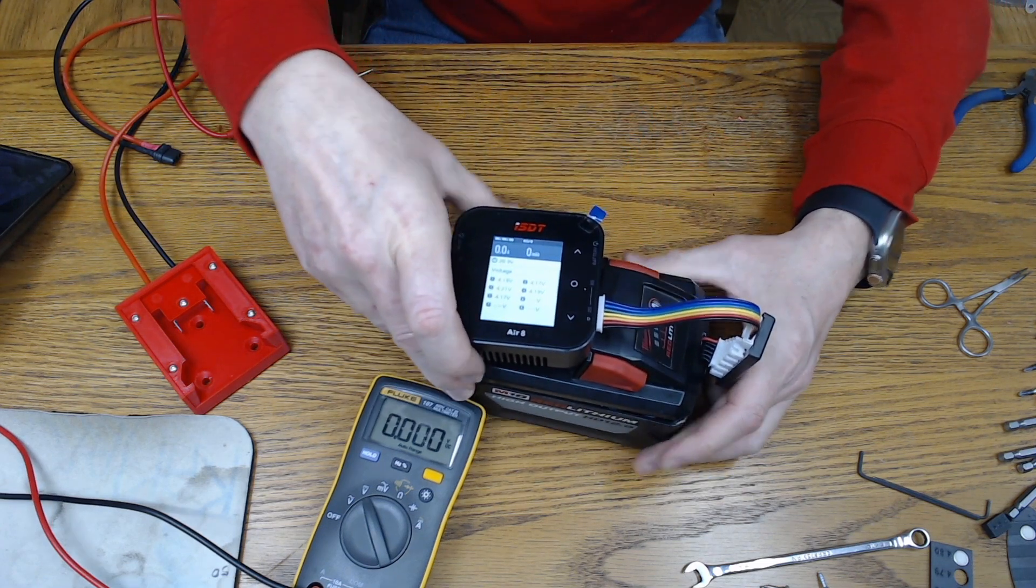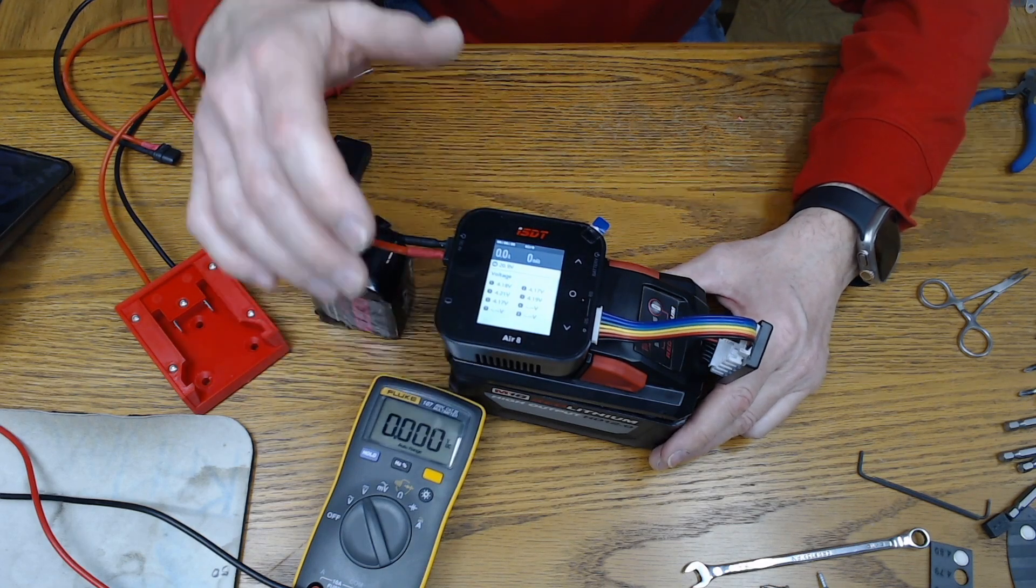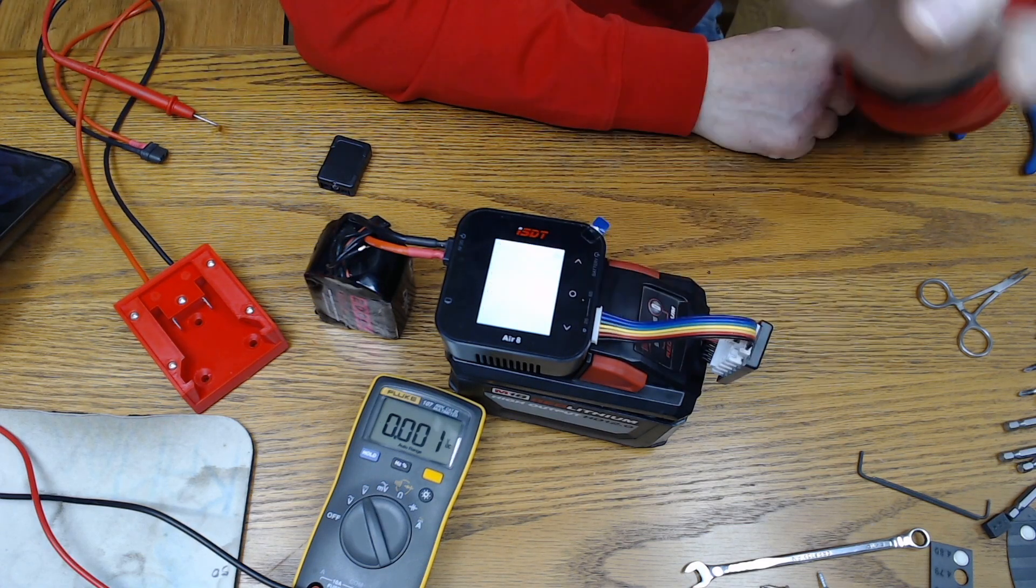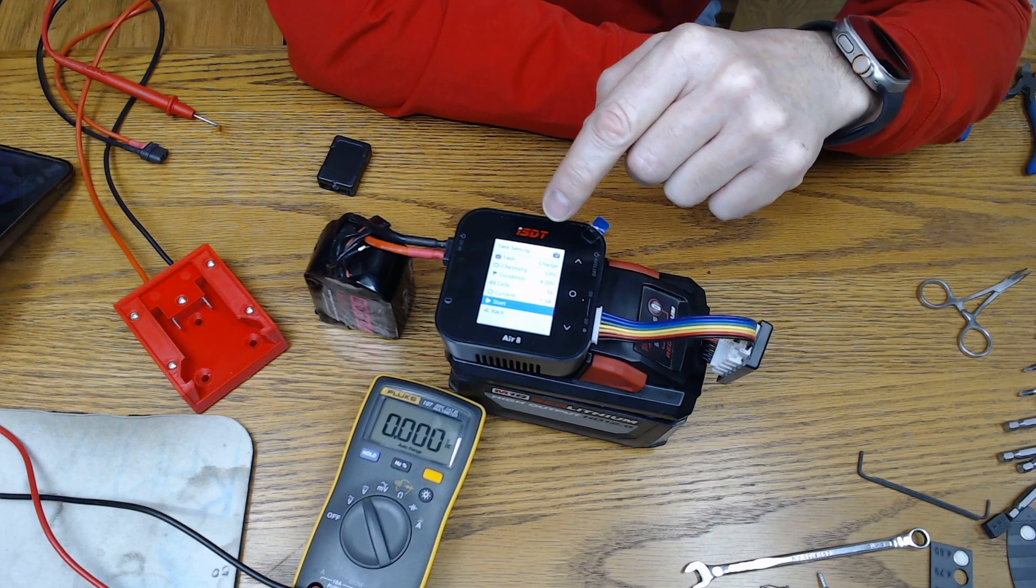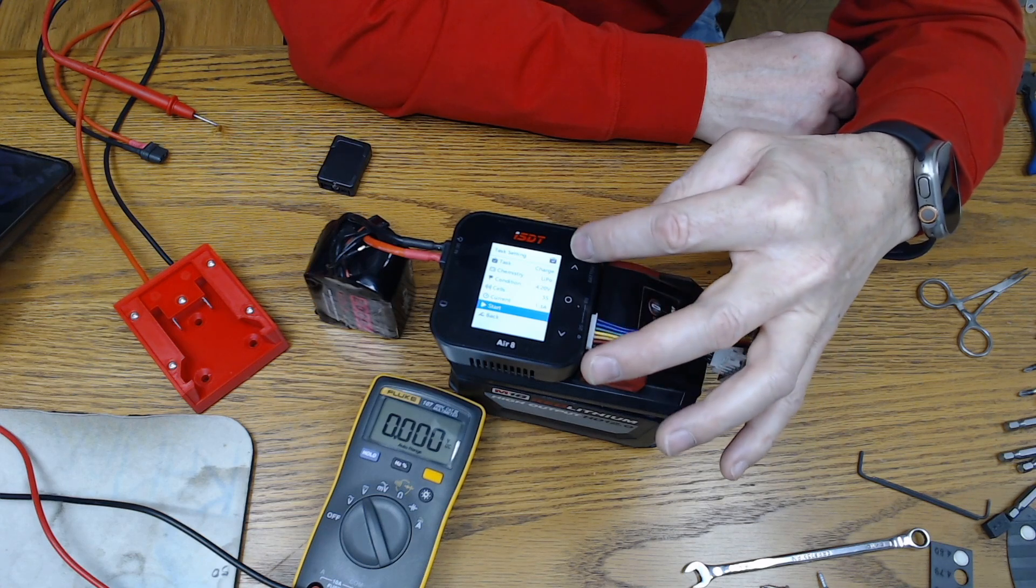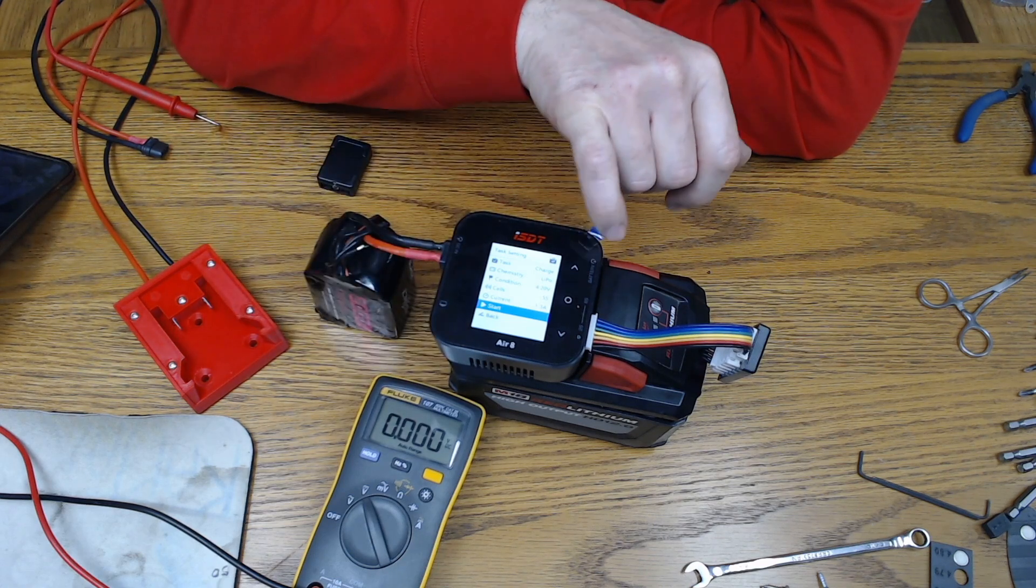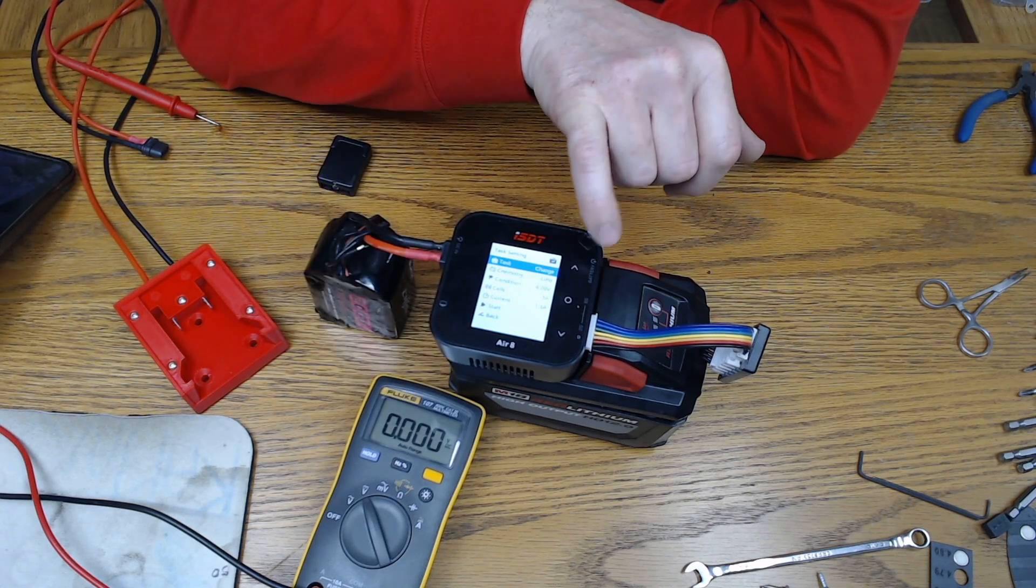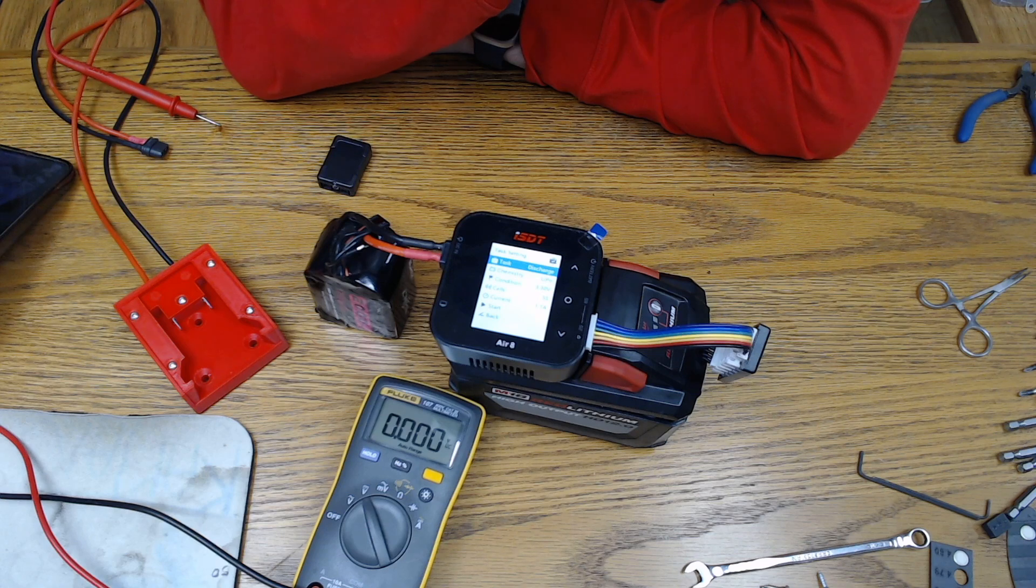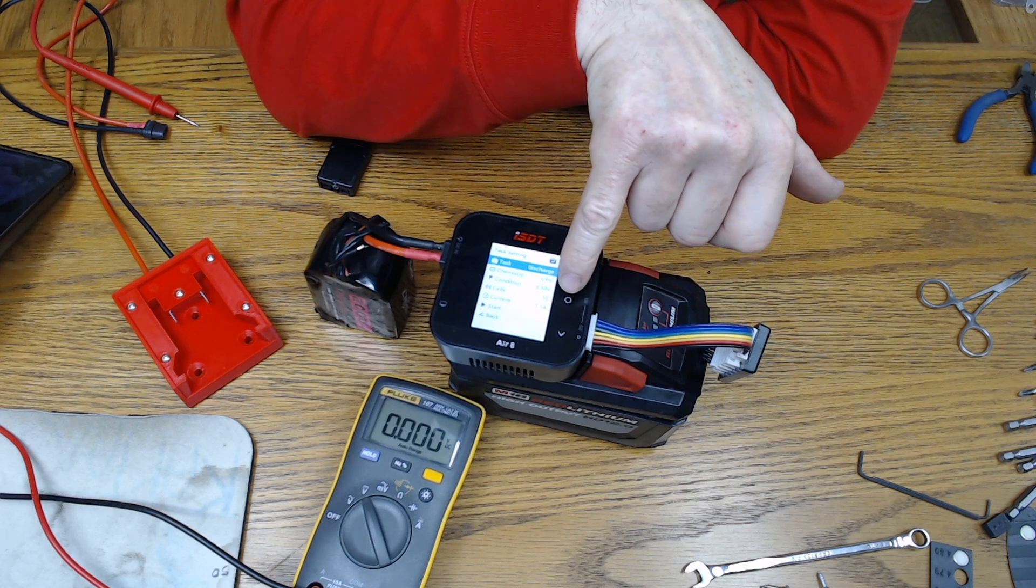As you see, all my cells are showing up there. Now with this device you can go through different tasks. You can charge, which I want to show you a discharge real quick. This is how I can condition and keep a battery. I'm gonna discharge at 1.1 amps per cell down to - it says condition 3.3 volts.